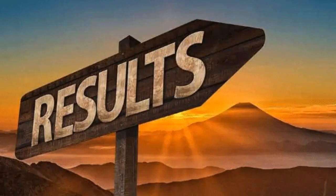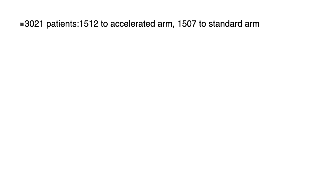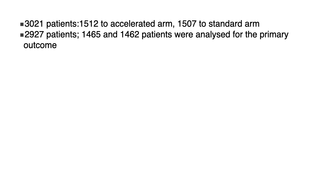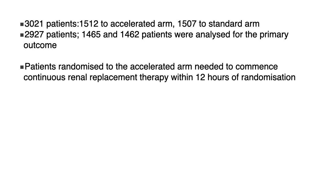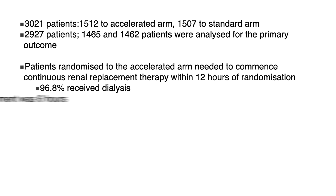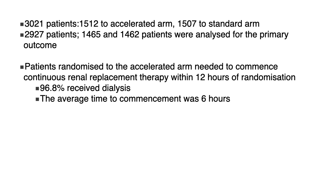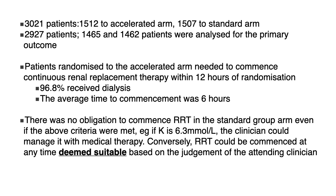A total of 3,021 patients were randomized: 1,512 to the accelerated arm and 1,507 to the standard arm. Of these, 2,927 were analyzed — 1,465 and 1,462 in the respective groups. Patients in the accelerated arm were required to commence renal replacement therapy within 12 hours of randomization; 96.8% did so, with an average time to commencement of 6 hours. There was no obligation to commence RRT in the standard group even if dialysis criteria were met.